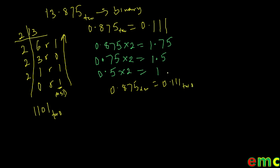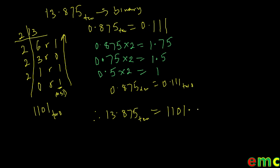Therefore our final answer is a combination of the whole number part, which is 1101, and the decimal part, which is 0.111. Therefore 13.875 in base 10 equals 1101.111 in base 2.